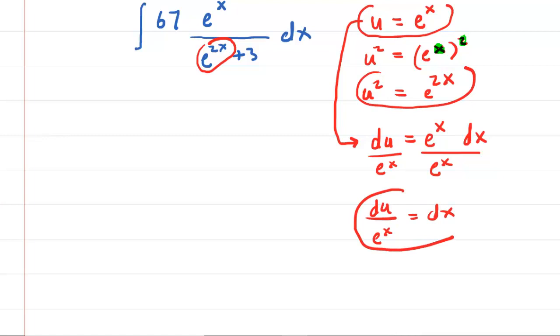Let's go back and try to make the substitutions. We have the integral of 67 e to the x all over—remember e to the 2x we figured out was u squared—so we'll write u squared, then plus 3. And the dx becomes du over e to the x. What's nice here is the e to the x in the numerator and the one in the denominator will cancel out, leaving us with 1 in the numerator.